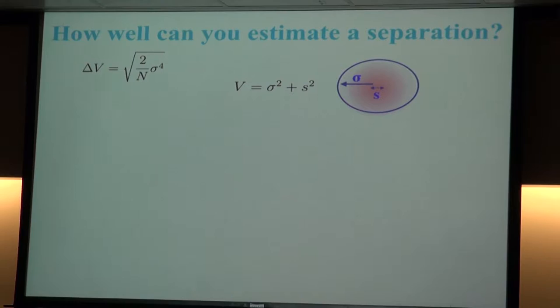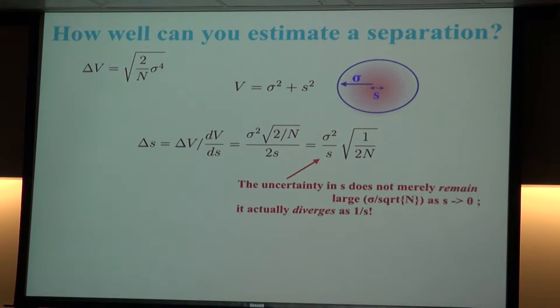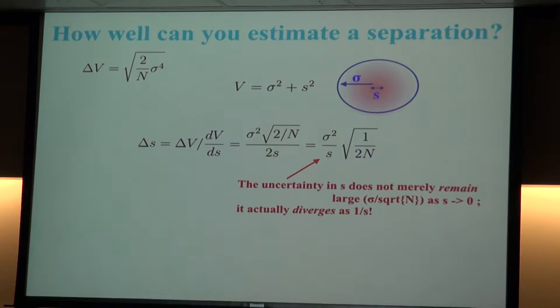From our uncertainty in this variance V, we can figure out the uncertainty in S. The important thing is: it is not just equal to sigma over root N. It's equal to sigma-squared over S, times something like one over root N. So as that separation S goes to zero, it's not just that these small numbers are hard to measure relative to sigma — the uncertainty actually goes up while the thing you're trying to measure goes down. This is what Mancat Tsang has termed Rayleigh's curse.